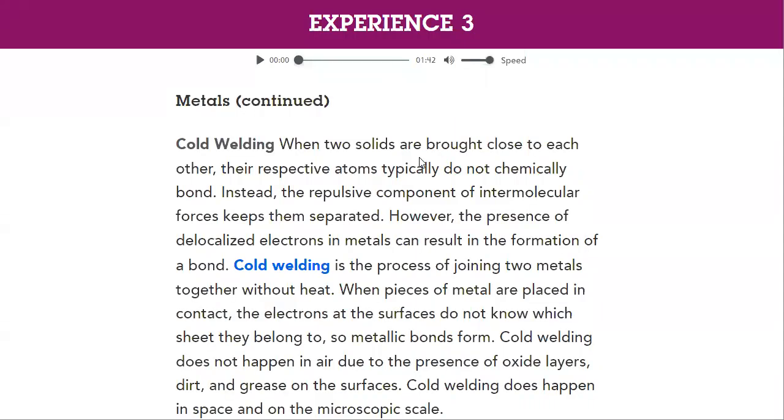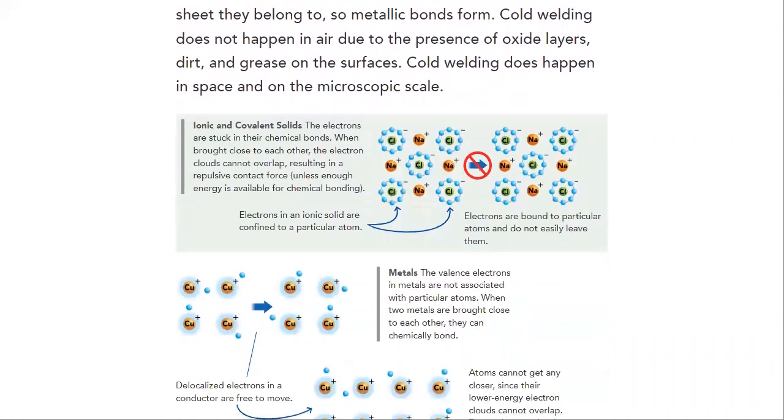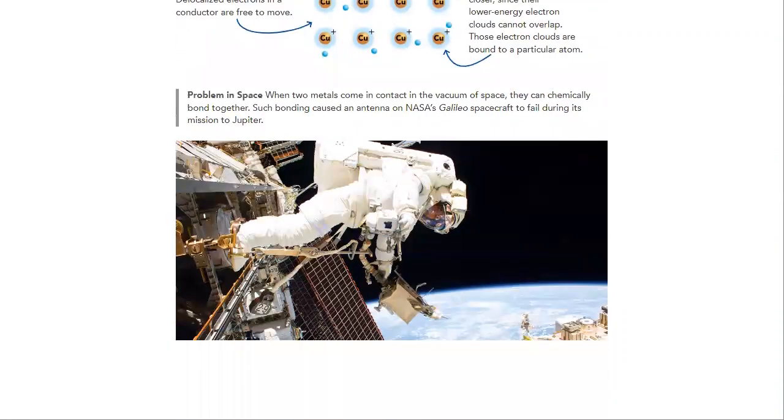We will also discuss cold welding, which is the process of joining two metals together without heat. And this is how they fix problems in space. When two metals come in contact in the vacuum of space, they can chemically bond together.